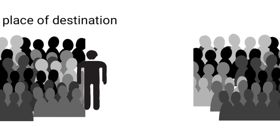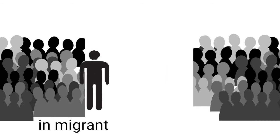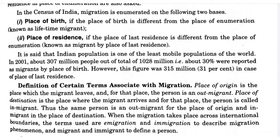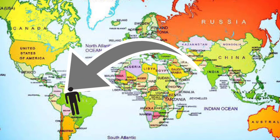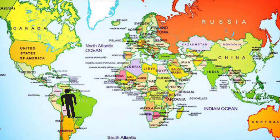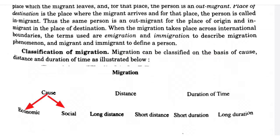A few key terms to know: place of origin means where the migrant originated, and place of destination means where the migrant is arriving. The same person is termed an out-migrant at the place of origin and an in-migrant at the place of destination. If migration occurs across borders, it is termed immigration when leaving the native country and in-migration in the arriving country. Migration is also classified on the basis of cause — economic and social; on the basis of distance — long distance and short distance; and on the basis of duration of time — short duration and long duration.